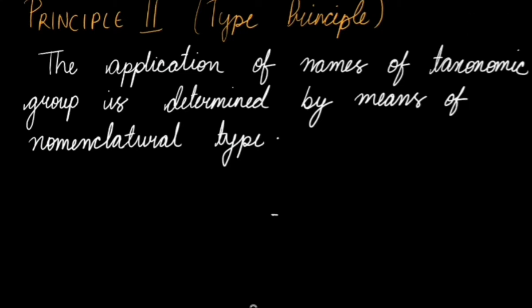Principle number two states that the application of names of taxonomic groups is determined by means of nomenclature type. Nomenclature type is a herbarium specimen to which the name of a taxon is permanently attached. So which means that when a species is described or discovered for the first time, before doing the nomenclature, a type specimen or herbarium has to be designated.